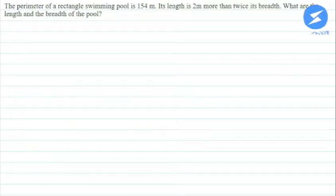Hello everyone, hope you are doing well. I am going to explain this question in this video. The question states that the perimeter of a rectangle swimming pool is 154 meters. Its length is 2 meters more than twice its breadth. What are the length and the breadth of the pool?